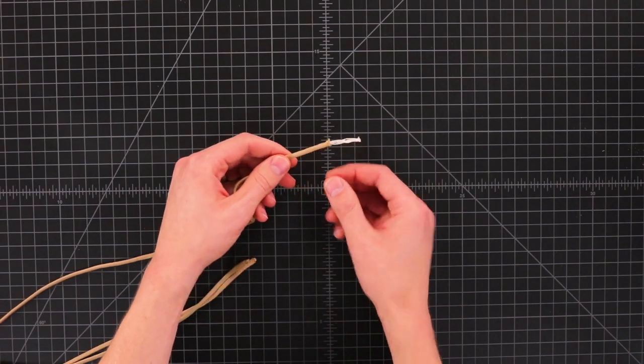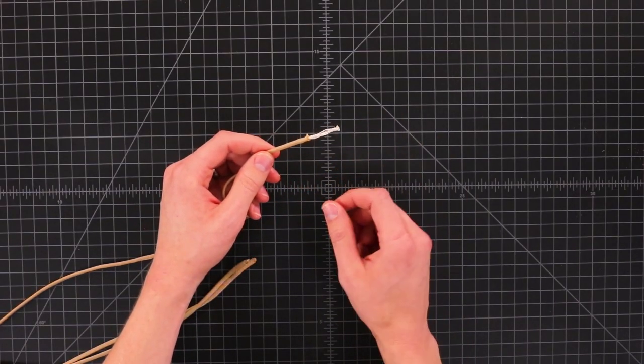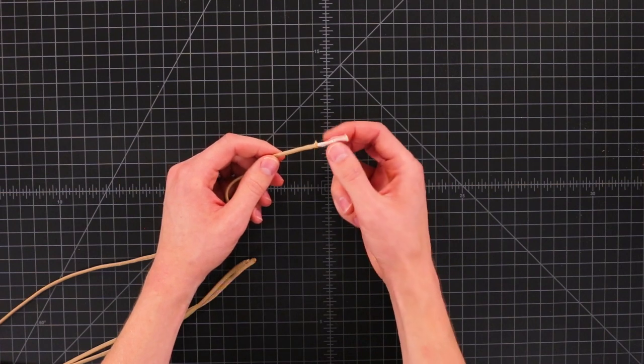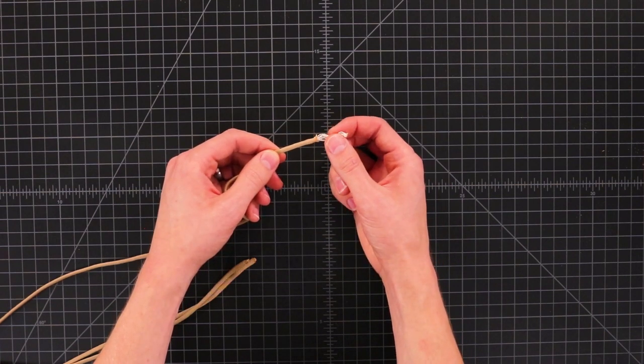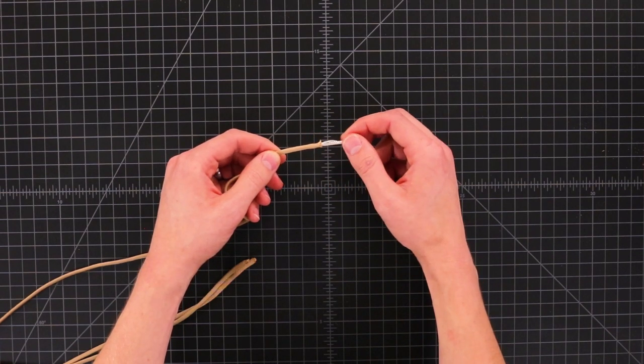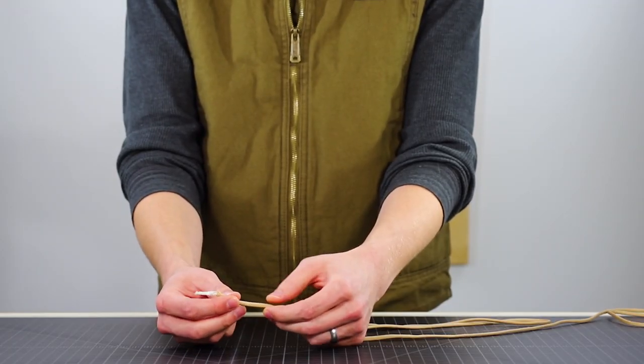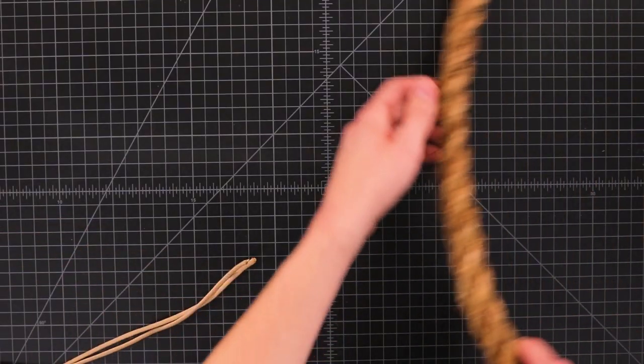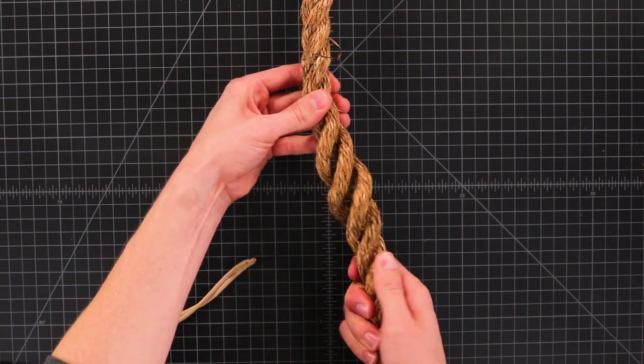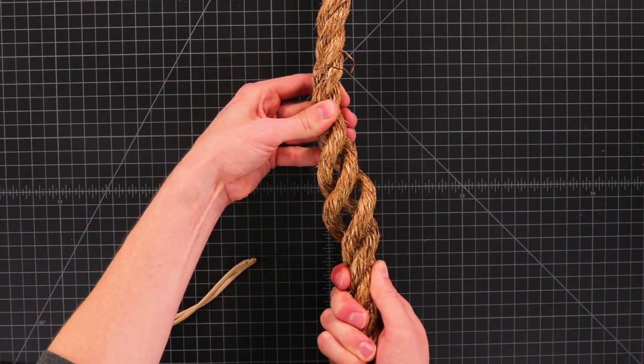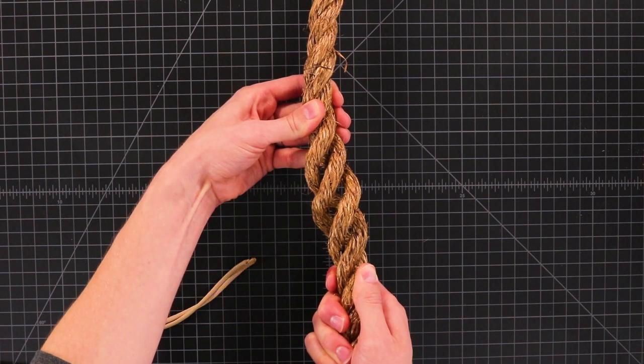So the word kern mantle has two parts, the kern and the mantle. The kern or the core is these twisted strands in here and the outer mantle or sheath that is braided. A lot of ropes are just twisted instead of braided. I've got a big rope here that has three strands that are twisted around each other.